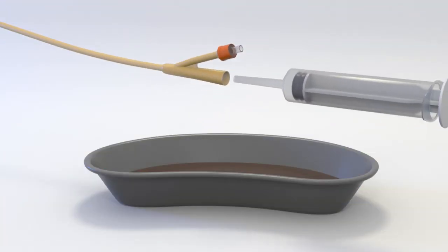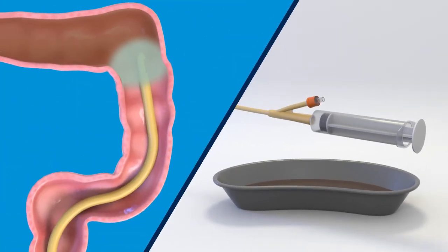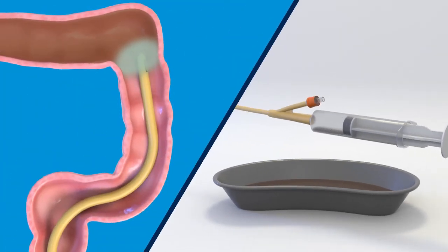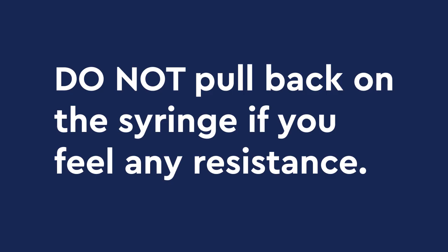If you think there is still fluid in the colon you can reattach the syringe to the catheter and very gently pull back on the syringe to draw out the fluid. Do not pull back on the syringe if you feel any resistance.